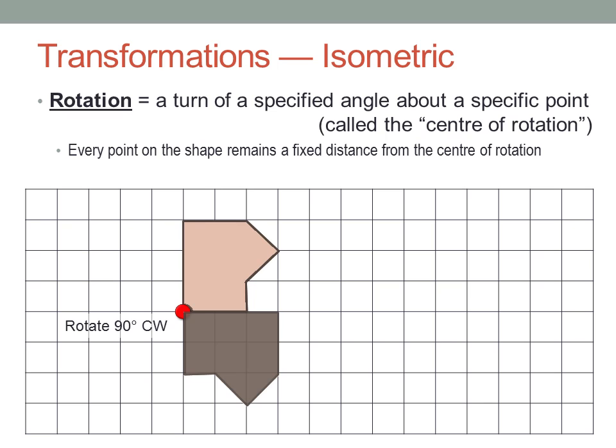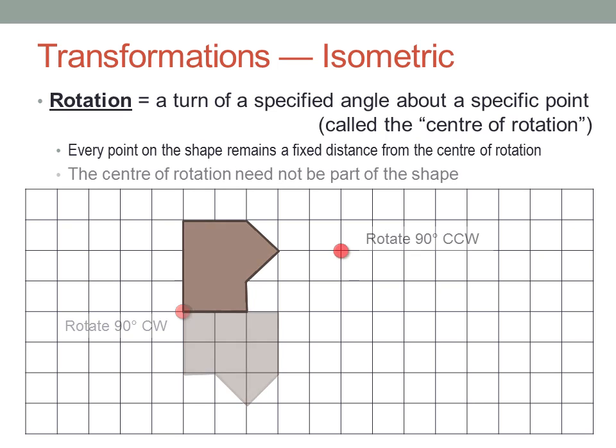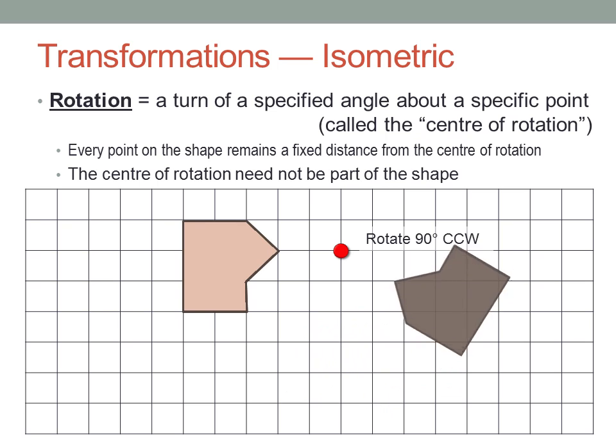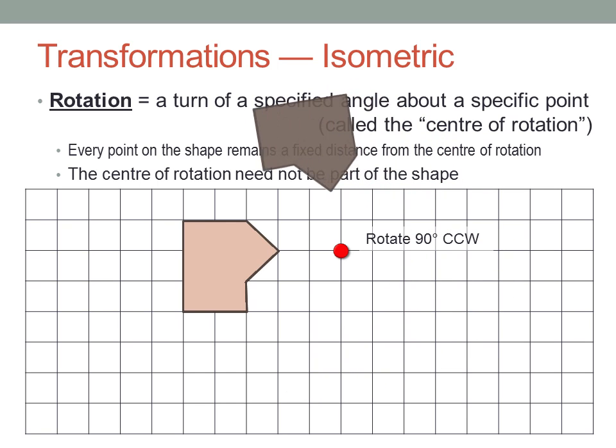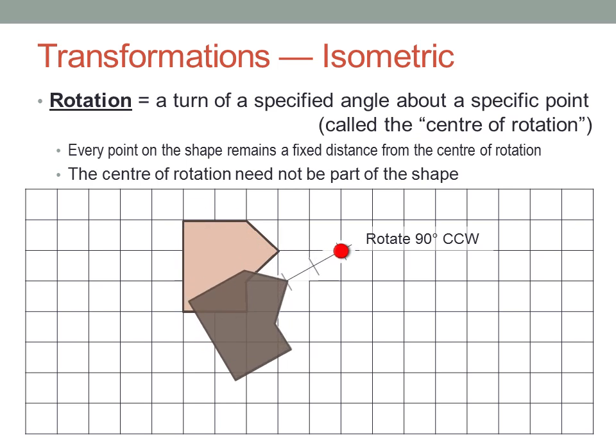But the centre of rotation doesn't have to be part of the object. Here's an example where the centre of rotation is off to the right. We have to rotate it anti-clockwise ninety degrees. This is a little trickier, but again let's get our cut-out shape and rotate it around. Can you see the circles each point on the shape is following? Where are they centred? It may help you, if you're cutting the shape out, to include the centre of rotation in the piece you cut. Then you can hold it still there as you rotate.